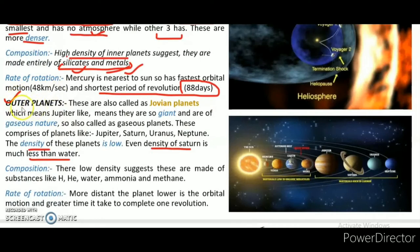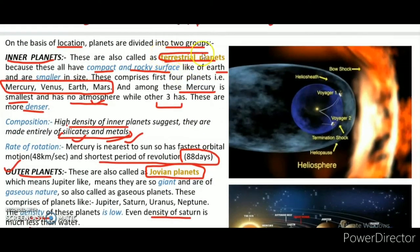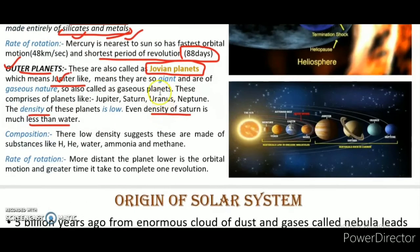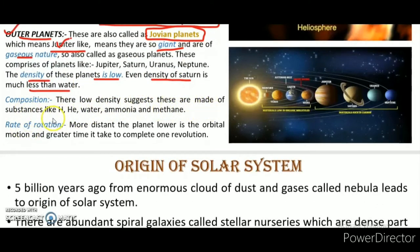On the other side, the outer planets are called Jovian planets — meaning Jupiter-like — because Jupiter is very large. These are giant and gaseous in nature. The four outer planets are Jupiter, Saturn, Uranus, and Neptune. They have low density, made up of substances like hydrogen, helium, water, ammonia, and methane — mainly gases.